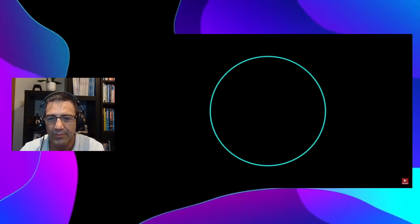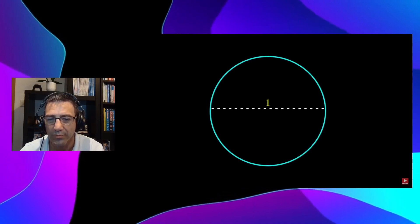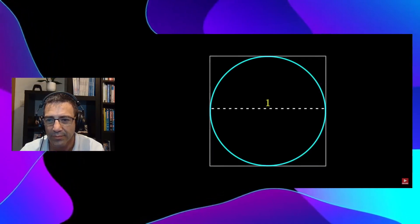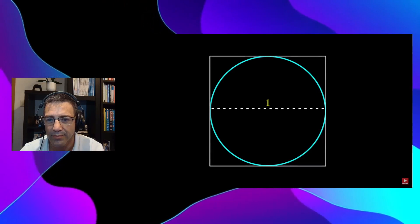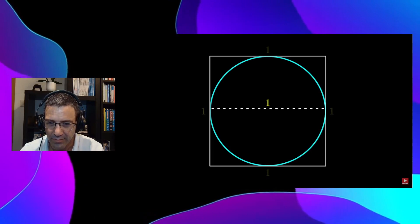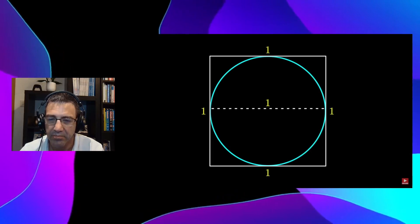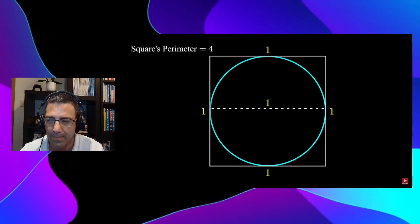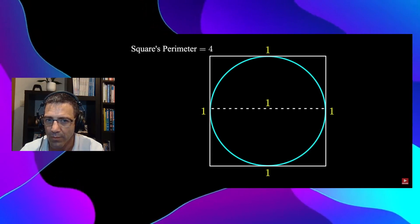First draw a circle with diameter 1. Next draw a square around it so the circle is perfectly inscribed in the square. Notice that this square has perimeter 4. If you add up all the lengths of its sides, each side is length 1, you get 4.